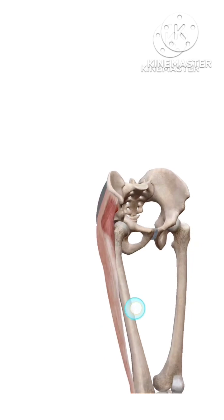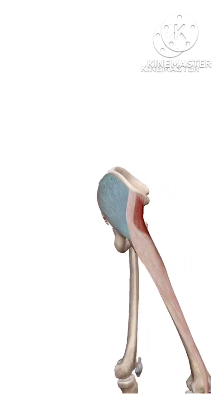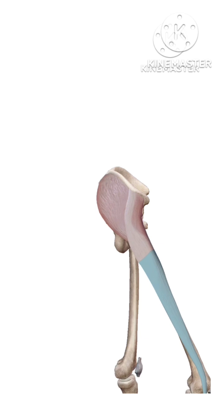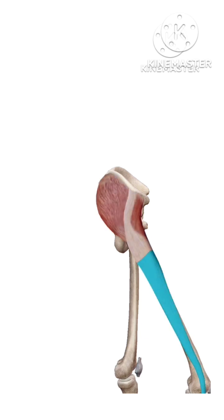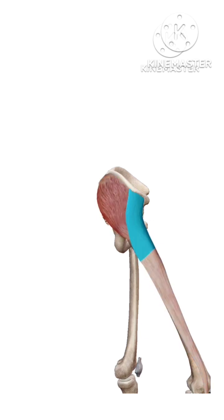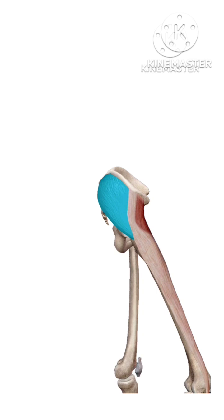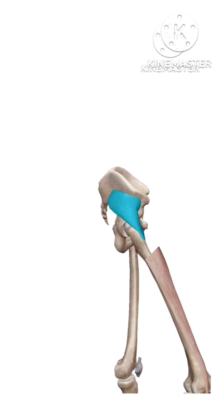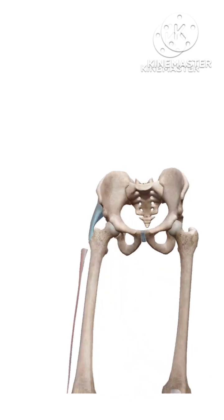The muscles involved in this movement are: the iliotibial tract, tensor fasciae latae, gluteus medius, and just beneath the gluteus medius and tensor fasciae latae, this muscle is your gluteus minimus. So these muscles work in the medial rotation of the hip. Hope you guys understand — bye!